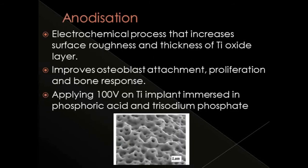Anodization is an electrochemical process to increase the surface roughness and thickness of the titanium oxide layer, modifying its crystalline nature. The titanium implant is placed as an anode in an electrolytic solution of phosphoric acid and trisodium phosphate and current is passed. This results in growth of the native titanium oxide layer from 5 nanometers to 10,000 nanometers thickness, and also produces a porous surface topography, improving osteoblastic attachment, proliferation, and bone response.